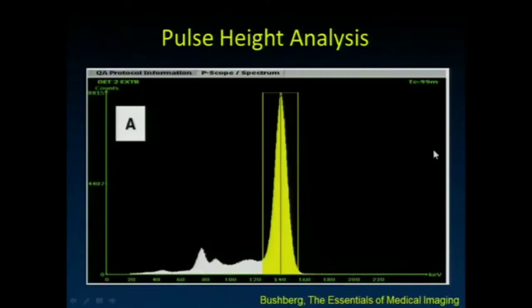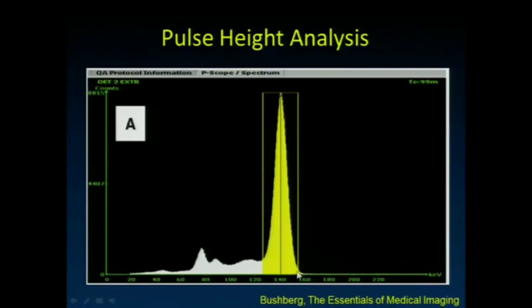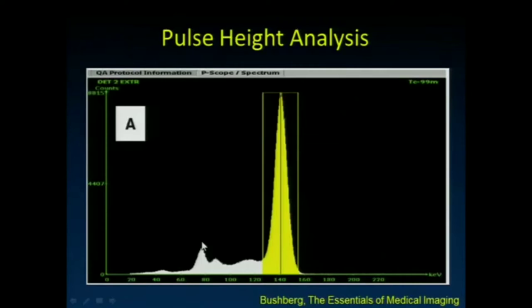When detecting gamma rays from a patient given technetium-99m, we see a big peak centered at 140 keV. The events within our acceptance window are marked as true events used to make the image. Beneath that, there are some scattered events at lower energies. There's a small peak just below 80 keV — anyone know what that peak is from?